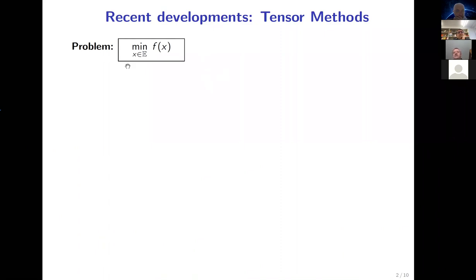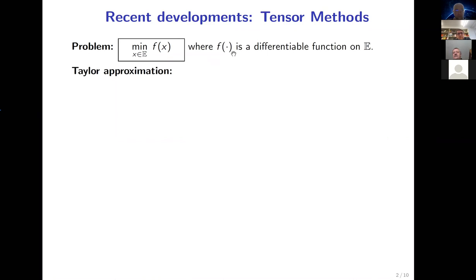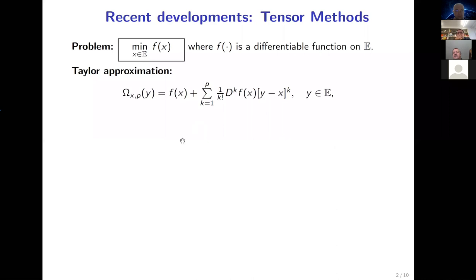We have a convex function without constraints — E is a finite-dimensional space, say R^n, and f is a convex differentiable function on the whole space. As mathematicians like to do, let us try to approximate our function by a Taylor approximation. We stay at the point x, compute derivatives up to order p, and write down the Taylor polynomial. The higher the degree of the polynomial, the better the approximation, and by analyzing this polynomial we can get better methods.